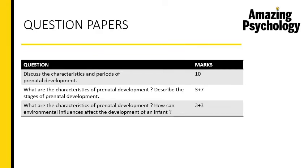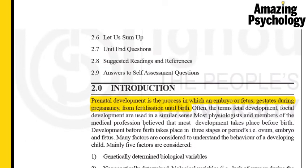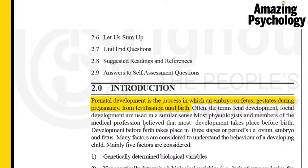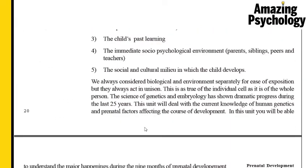Let's open up our textbooks to page number 20 — that's Unit 2 of Lifespan Psychology, the first book. We'll go through a brief introduction and then start looking at the different characteristics of prenatal development. Prenatal development is the process in which an embryo or fetus gestates during pregnancy from fertilization until birth. It's basically the time period of growth between fertilization and birth.